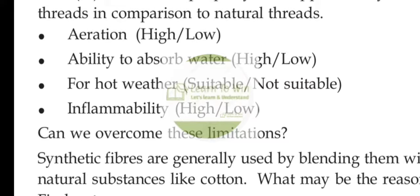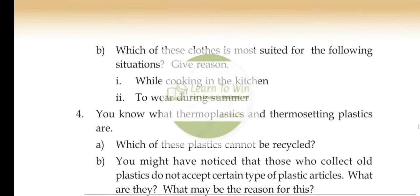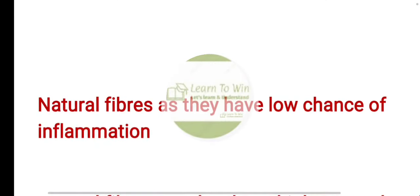Which of these clothes is the most suited in the following condition? While cooking in the kitchen, natural fibers are preferred. Cotton dresses have a low chance of inflammation, so natural fibers are best suited for cooking in the kitchen.